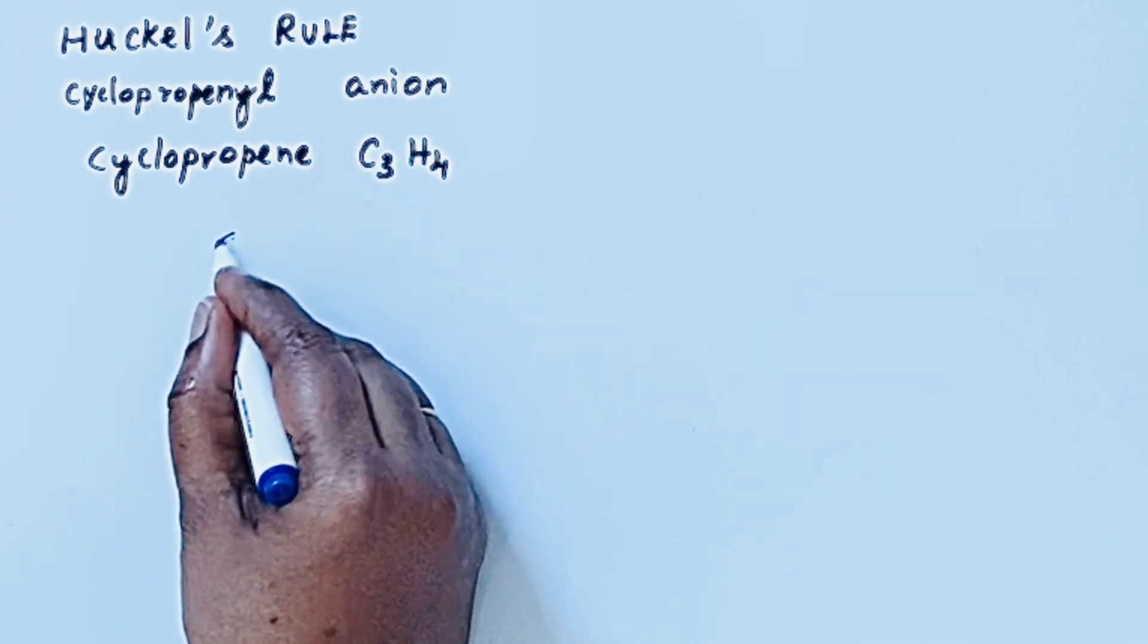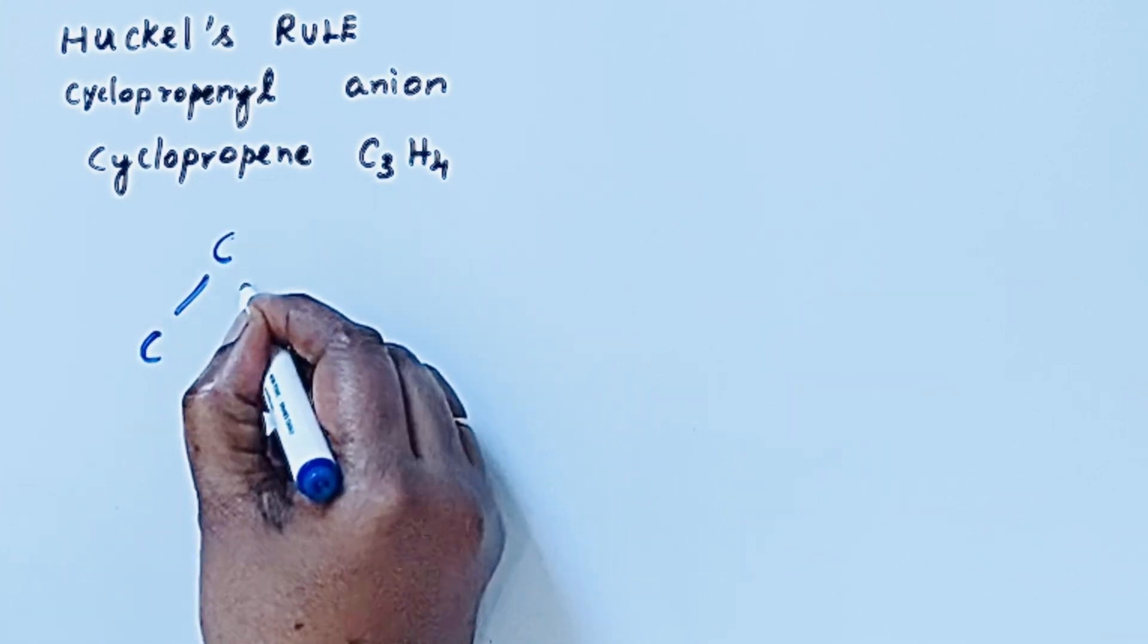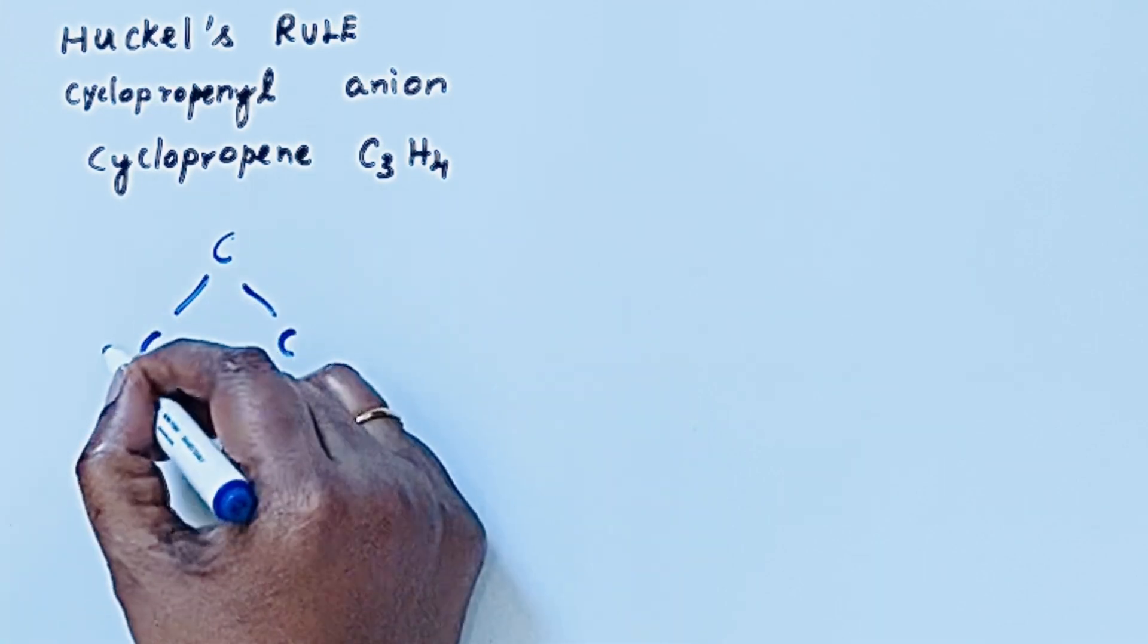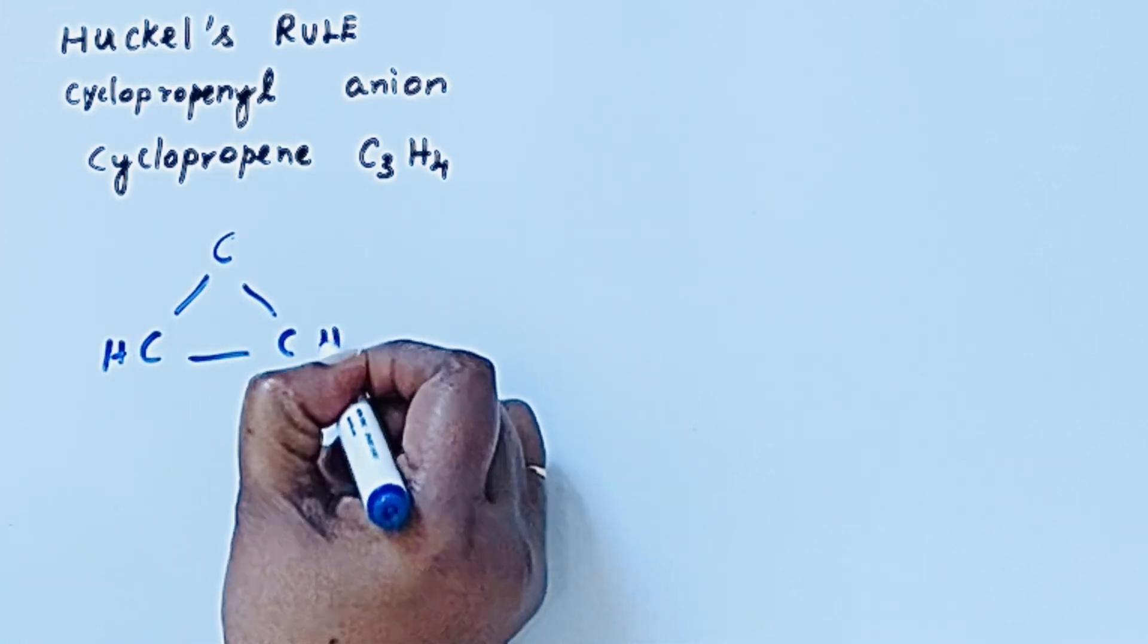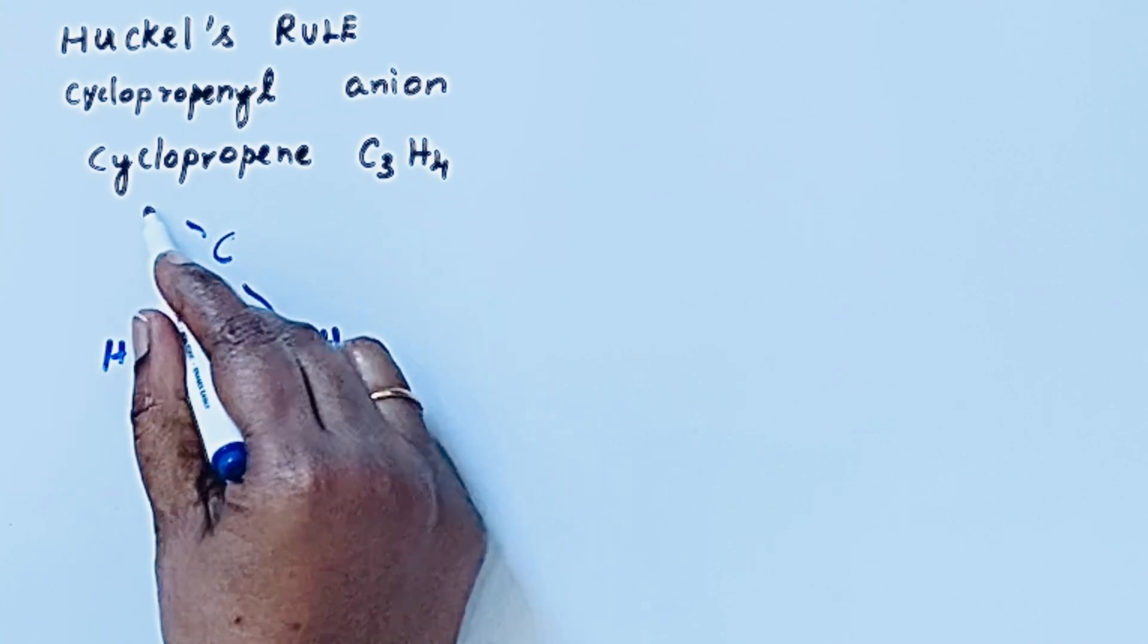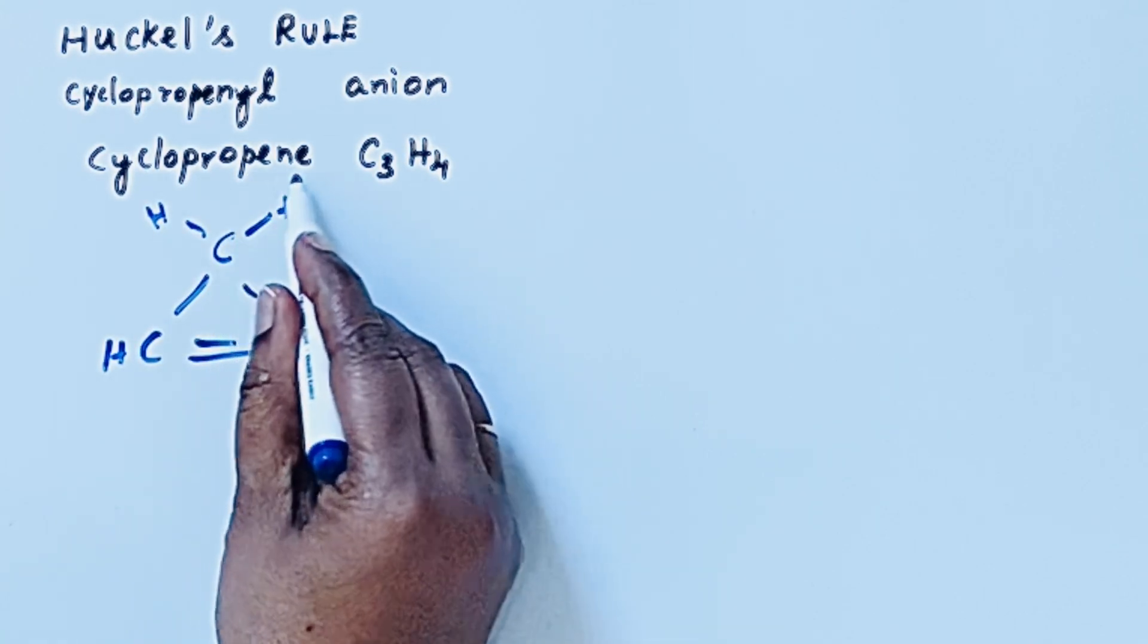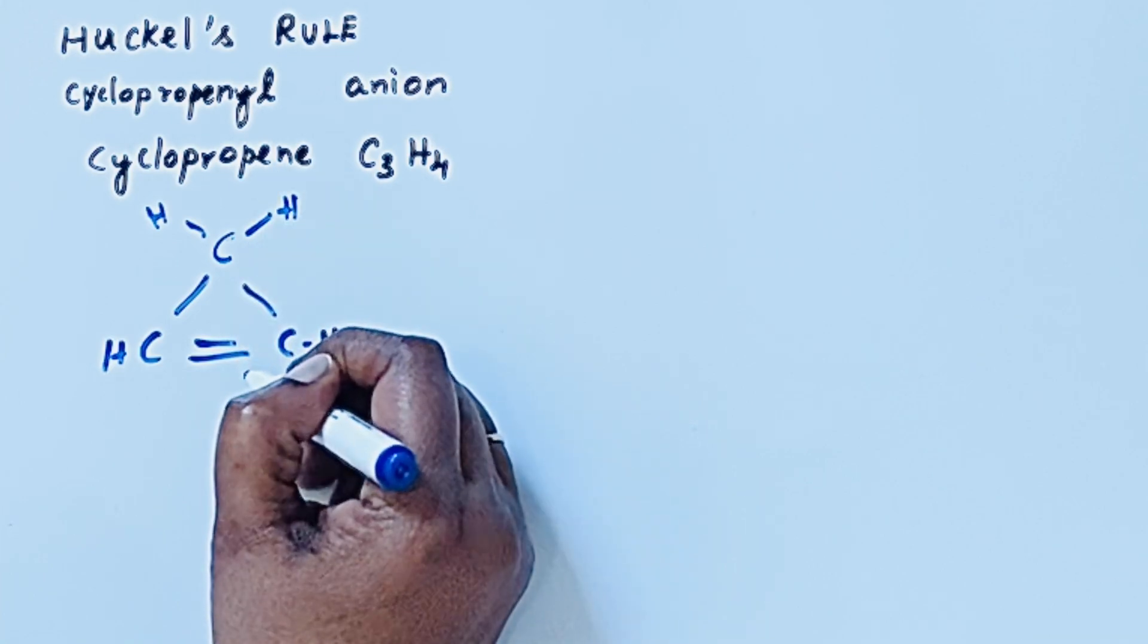There are 3 carbons in the chain. Then 4 hydrogen atoms. Here one hydrogen and here one hydrogen. There is a double bond because propene shows that there is a double bond.